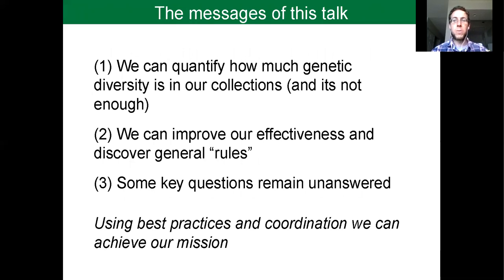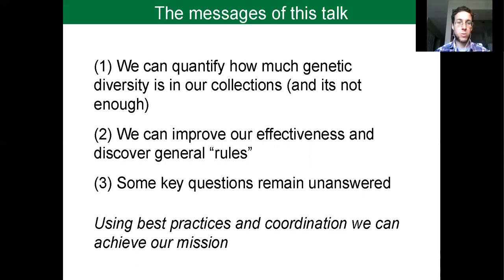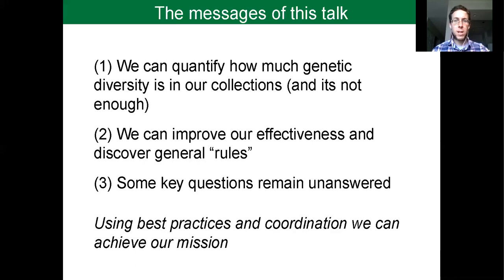Over the next 30 minutes or so, I'm going to show that we can use genetic data to quantify how much genetic diversity is in our botanic garden collections. I'll show that often our current efforts are not enough to conserve species for the long term. I'll show different ways we can improve the effectiveness of our botanic garden work, including general rules and guidelines for future practice. I'll also talk about future work including key questions that need to be answered. I hope you'll see that we can generate best practice advice and coordinate among botanic gardens to achieve the mission of conserving biodiversity.